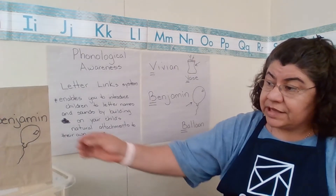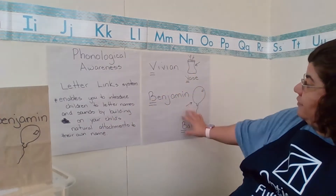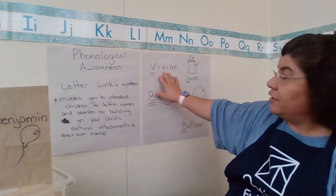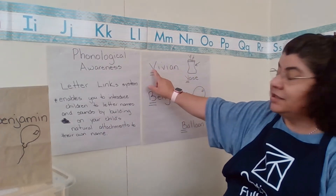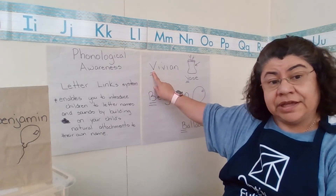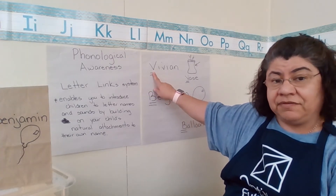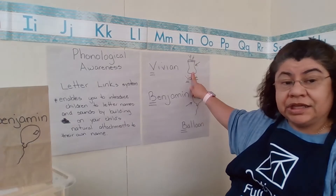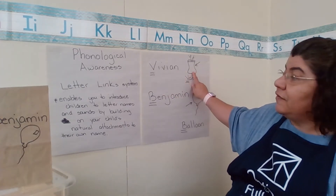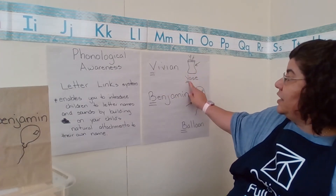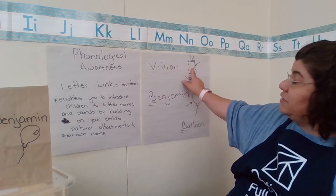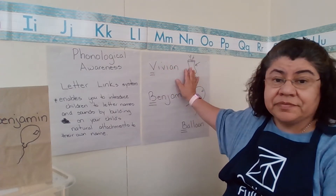So one of the examples I have here — my name is teacher Vivian. You would want to emphasize your letter sound: V, v, Vivian. And then something that goes along with the same letter and sound: V, v, vase. So this would be my letter link or symbol.